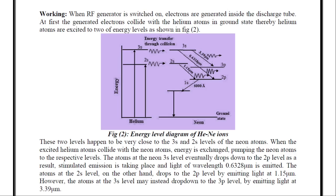The atoms at the 2s level, on the other hand, drops to the 2p level by emitting light at 1.15 micrometer. That means, atoms at 2s level will come to 2p level by emitting a light of wavelength 1.15 micrometer.